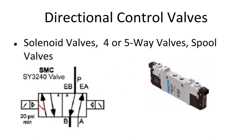Another example is a two-position five-way valve — five ways that material can flow — solenoid actuated, with two separate positions depending on how it's actuated.